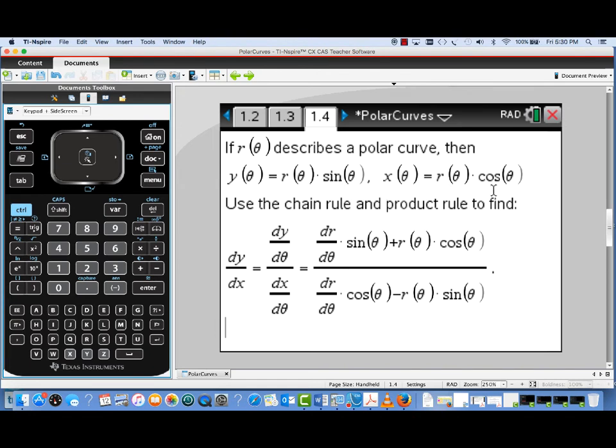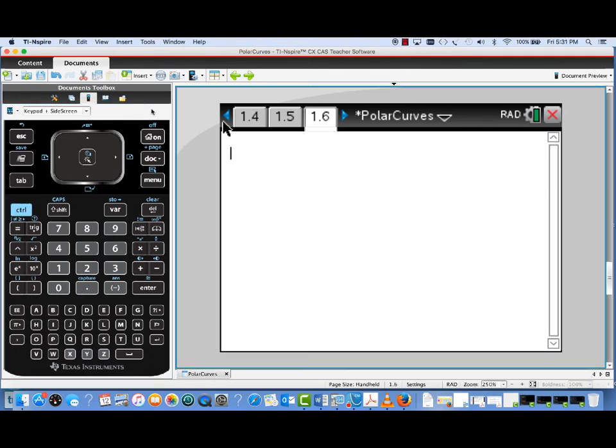y of theta is r of theta sine theta. x of theta is r of theta cosine theta. Then using chain and product rules, dy over dx would be dy over d theta over dx over d theta. And then we can actually express this in terms of theta. Now if dx d theta is 0 and dy d theta is not 0, that's a place where the tangent line would be vertical.